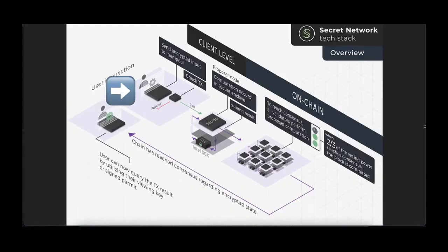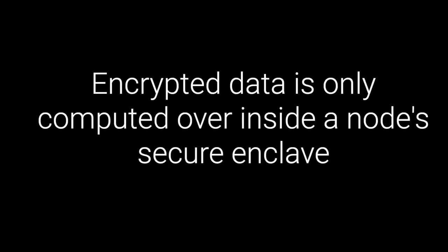Once that transaction is submitted to the mempool, a validator pulls it and begins to validate it. They're receiving encrypted data from users and they execute on the secret contract. When contract executions are submitted with encrypted data, it's important to know it can't be read by a developer, it can't be read by anyone observing the chain, or anyone running a node.